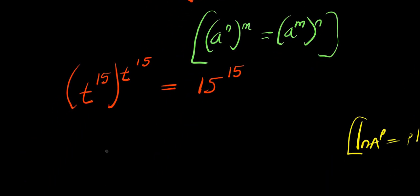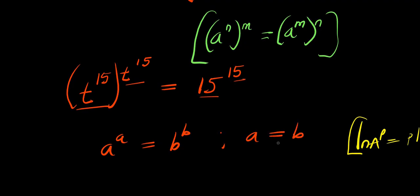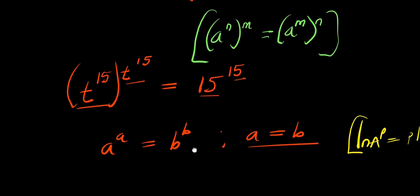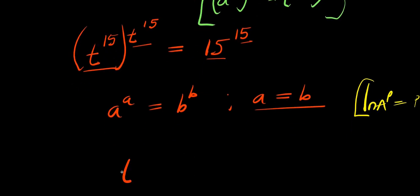Now if you have A^A equals B^B — because this is t^15, this is t^15, this is 15, and this is 15 — you can easily say that A equals B. That simply means that t^15 equals 15.